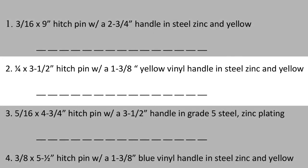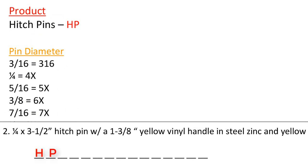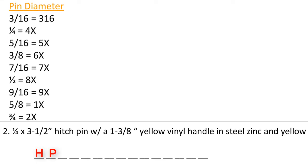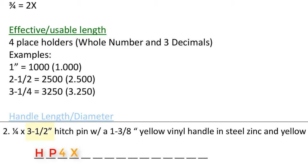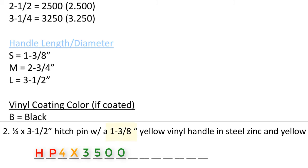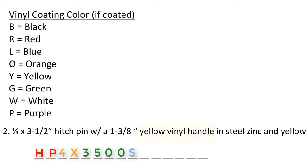Number 2: quarter by 3 and a half inch hitch pin with a 1 and 3/8 yellow vinyl handle and steel, zinc, and yellow. The part code starts with HP. The pin diameter is a quarter, which translates to 4X. The grip length is 3 and a half inches, which translates to 3-5-0-0. The handle length is 1 and 3/8, which is a small handle, or S in the part code. Then we identify the vinyl coating — this description reads yellow vinyl handle. The part code guide shows yellow equals Y, so we enter a Y.